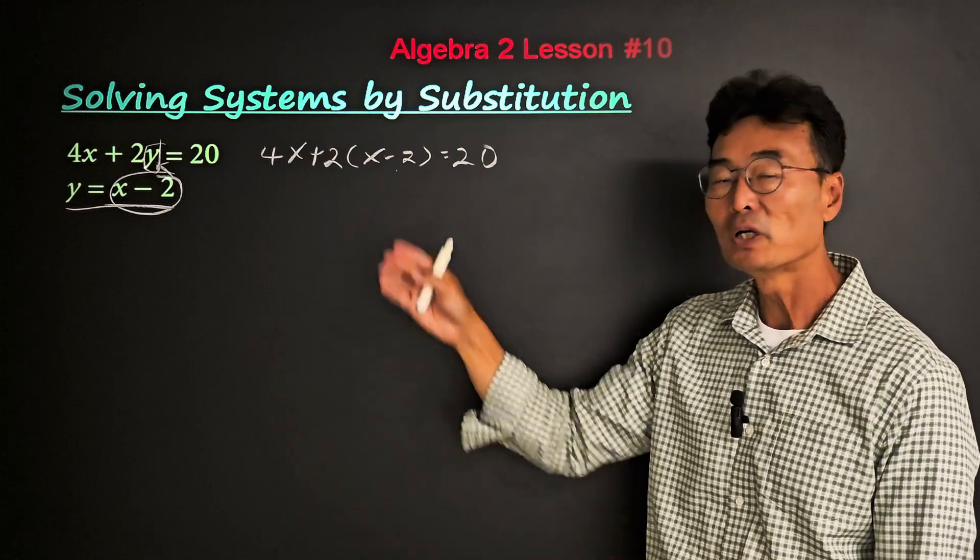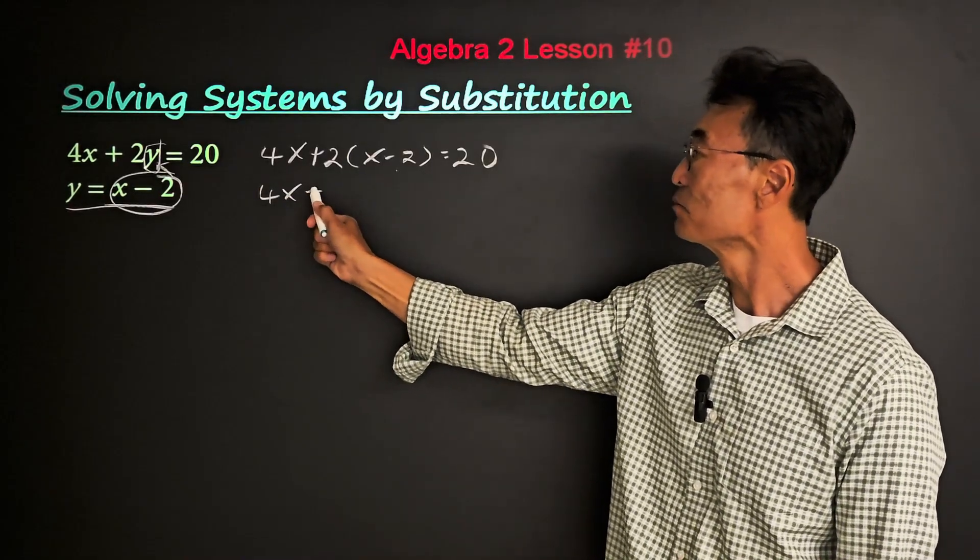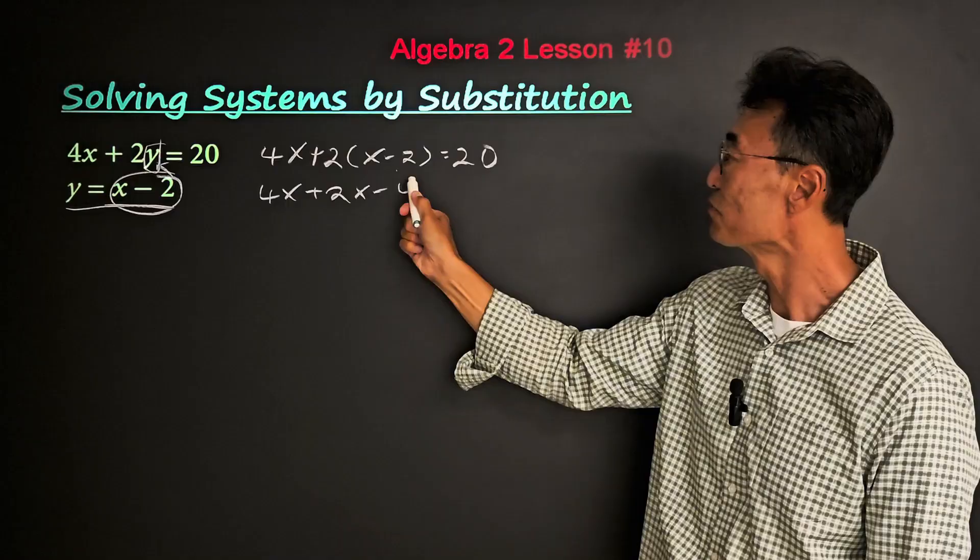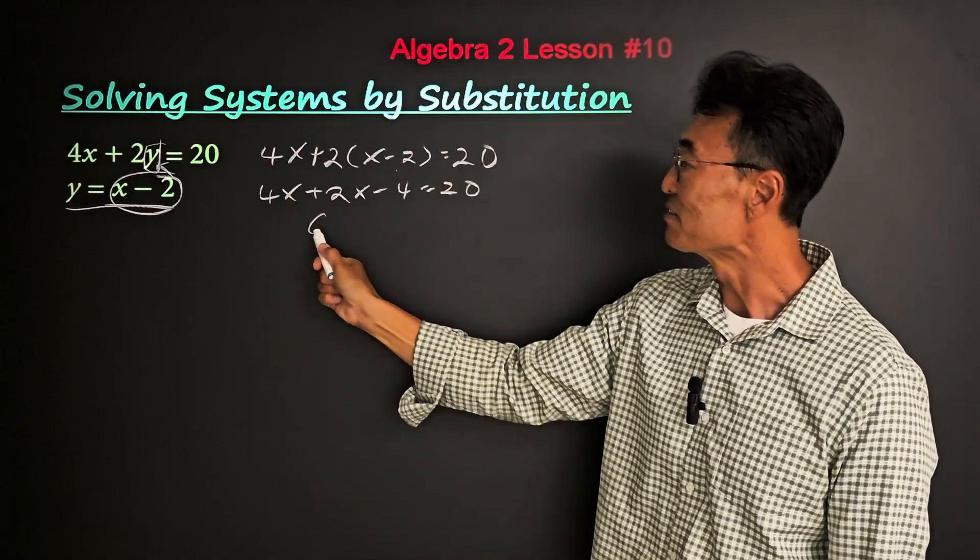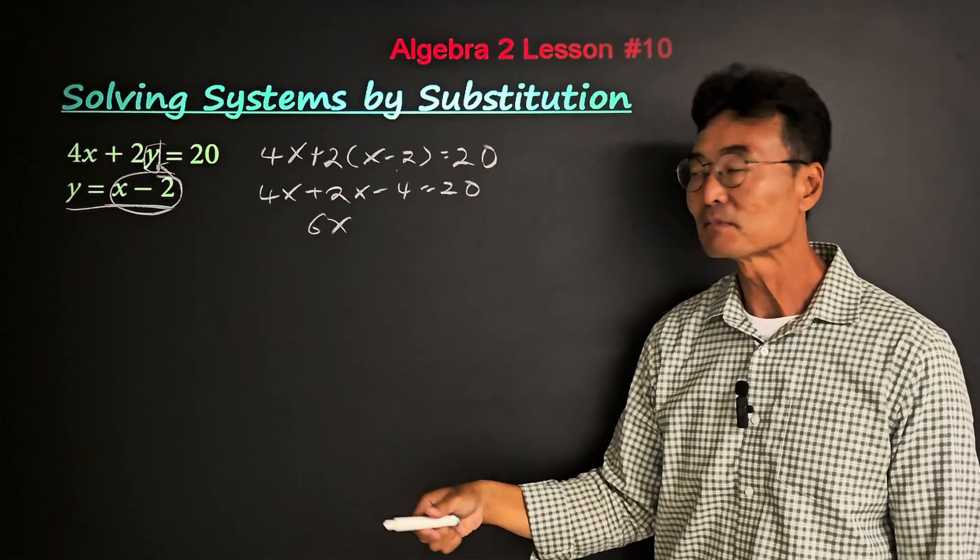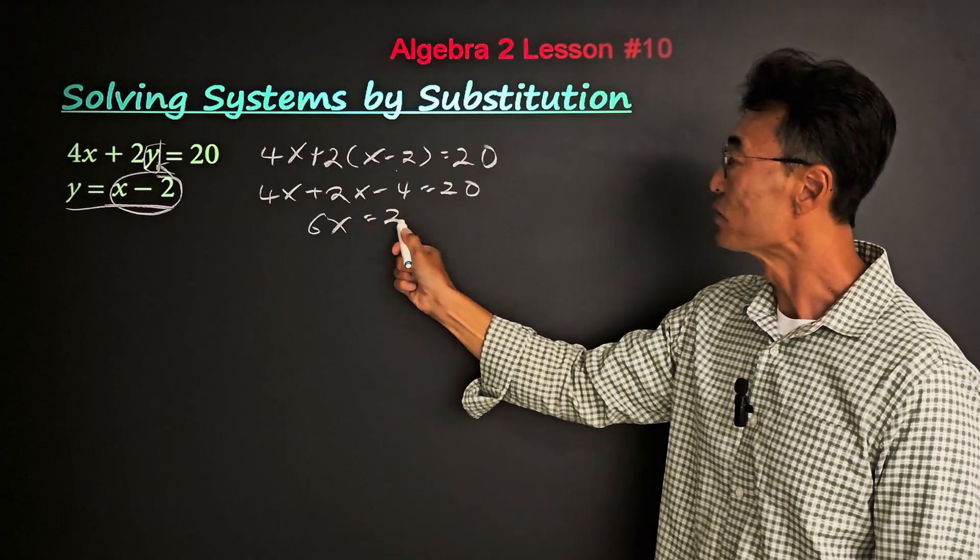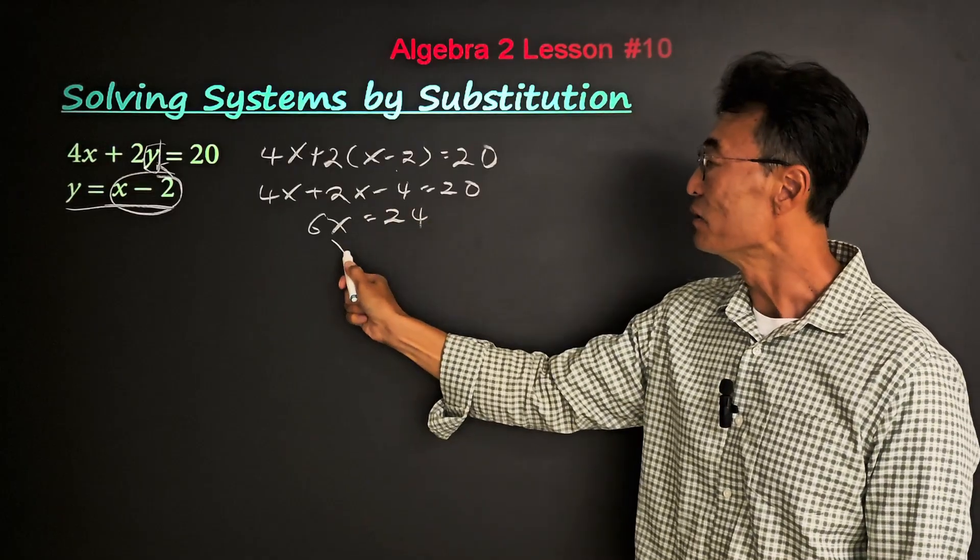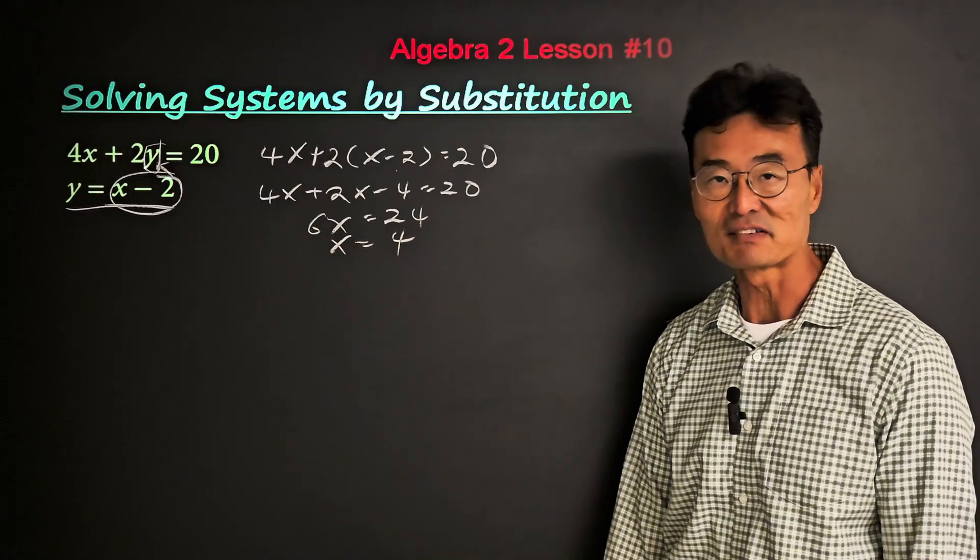Now that we have an equation with one variable, let's go ahead and do this. So we get 4x plus 2 times x minus 2 equals 20. That's 4x plus 2x minus 4 equals 20. 4x and 2x is 6x, and we'll add the 4 to both sides where we get 24. Therefore, x equals 4.